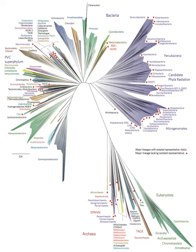The limbs divided into great branches, and these into lesser and lesser branches, were themselves once, when the tree was small, budding twigs, and this connection of the former and present buds by ramifying branches may well represent the classification of all extinct and living species in groups subordinate to groups.